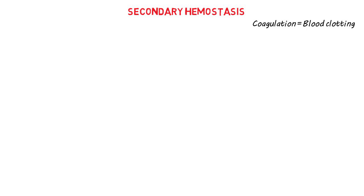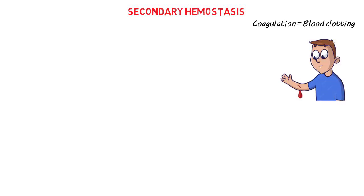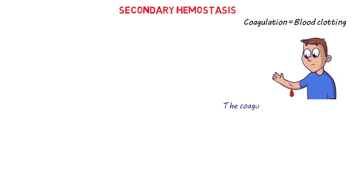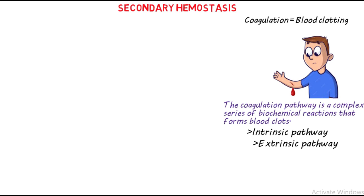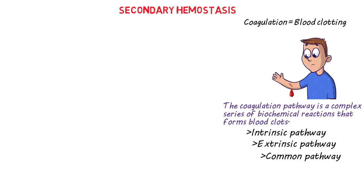We're using a very interesting mnemonic in this video. Coagulation is also known as blood clotting, and it's a process that helps to stop bleeding when the blood vessels are damaged. When you have a cut, the gush of blood is very fast, but after a while the flow of blood begins to reduce — that's the whole concept of coagulation. Coagulation pathways refer to the complex series of biochemical reactions that leads to the formation of a blood clot. We have two main coagulation pathways: the intrinsic pathway and the extrinsic pathway.